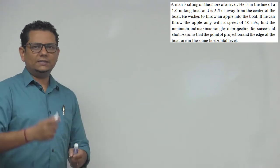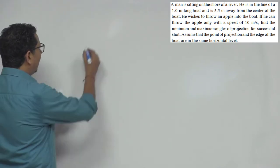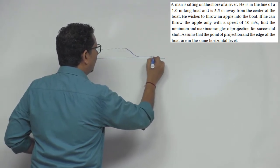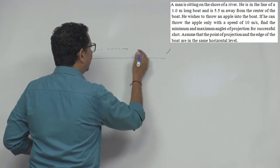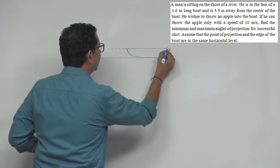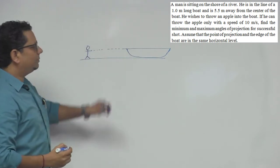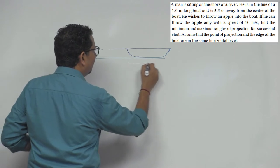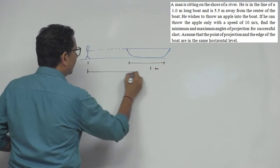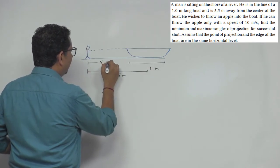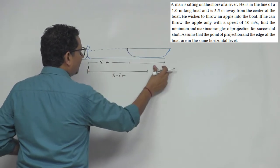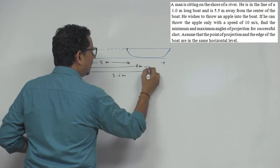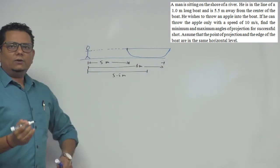Now it's a simple question, but the concept is clear. A person is trying to throw an apple. We have a boat like this. The person can throw at a speed of 10 meters per second. Now here the throw goes — you can see this angle here.